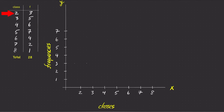For the first class two, the frequency is three. So draw a rectangle with a height of three on top of the class two. Notice how the tick on class two is in the middle of each side of the rectangle.